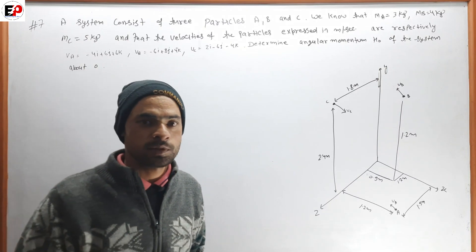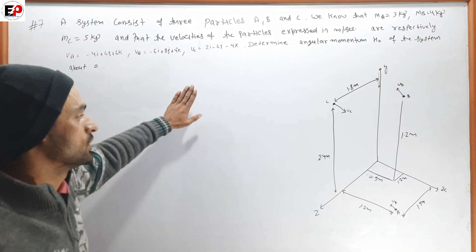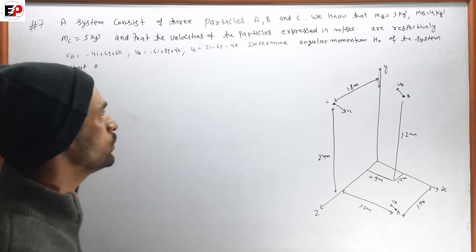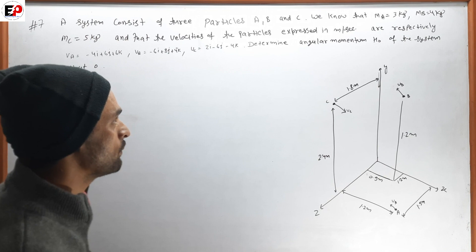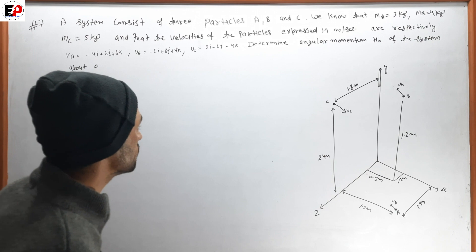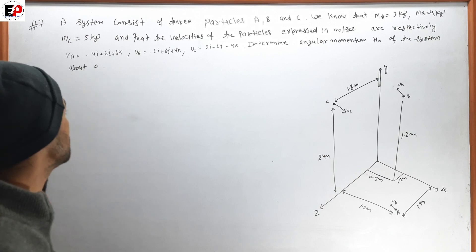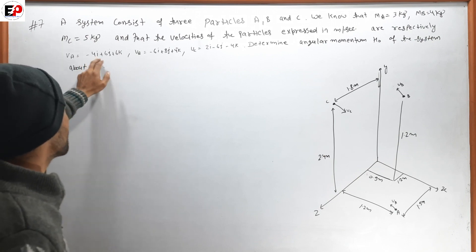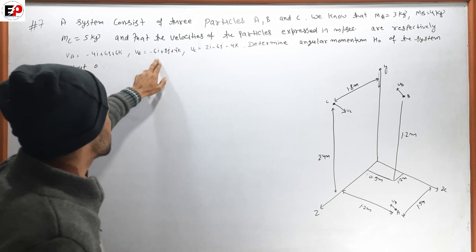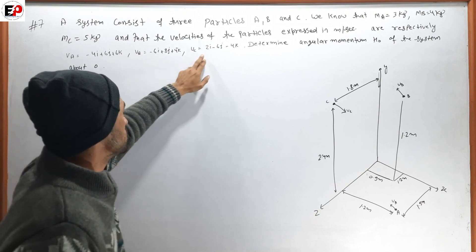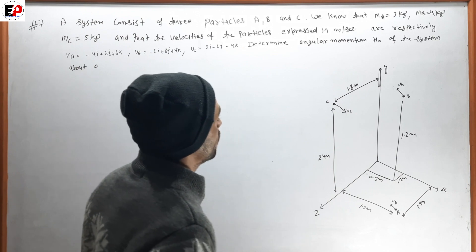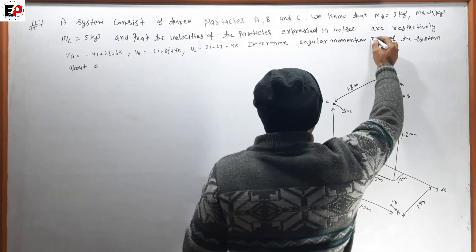A system consists of three particles A, B, C. We know that mass of A is 3 kg, mass of B is 4 kg, and mass of C is 5 kg. The velocities of the particles expressed in meters per second are respectively VA = -4i - 4j - 6k, VB = -6i + 8k - 4k, and VC = -2i - 6j - 4k. Determine the angular momentum H₀ of the system about O.